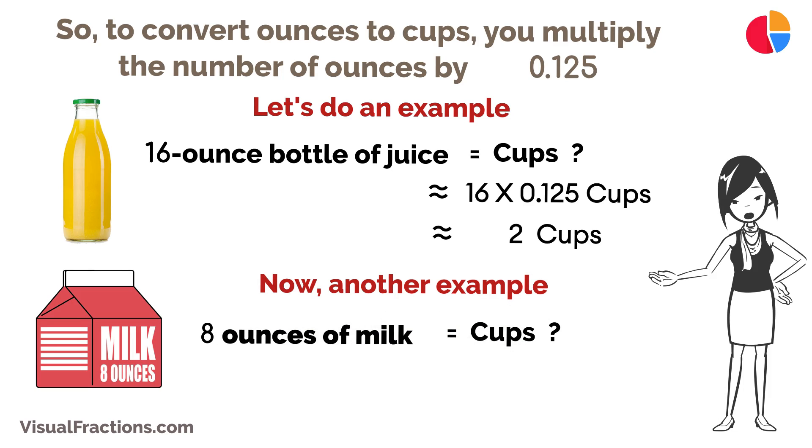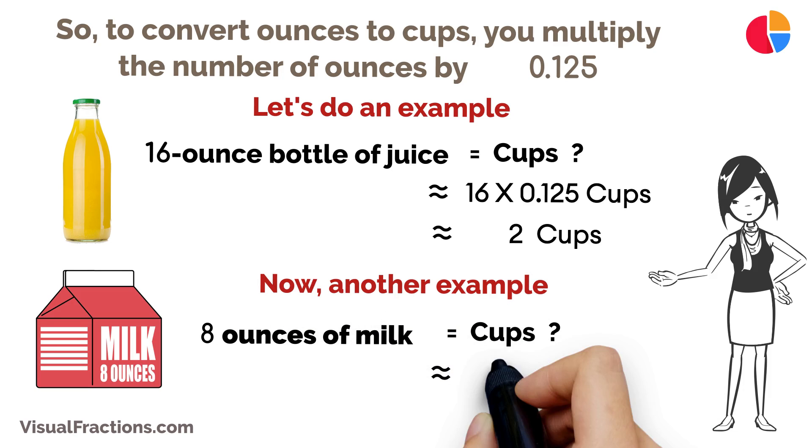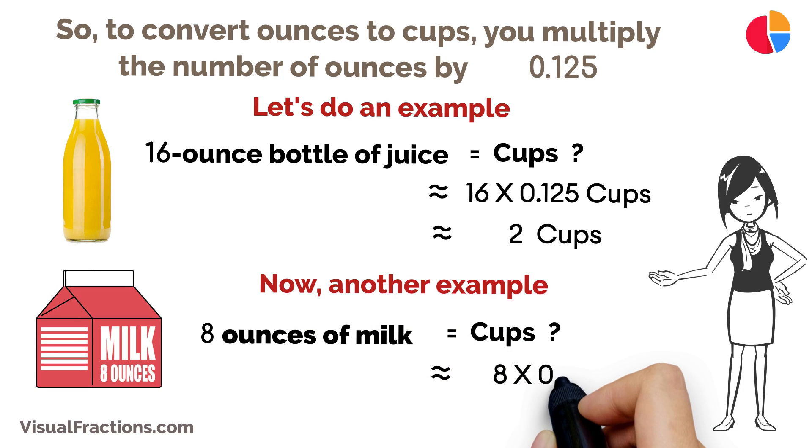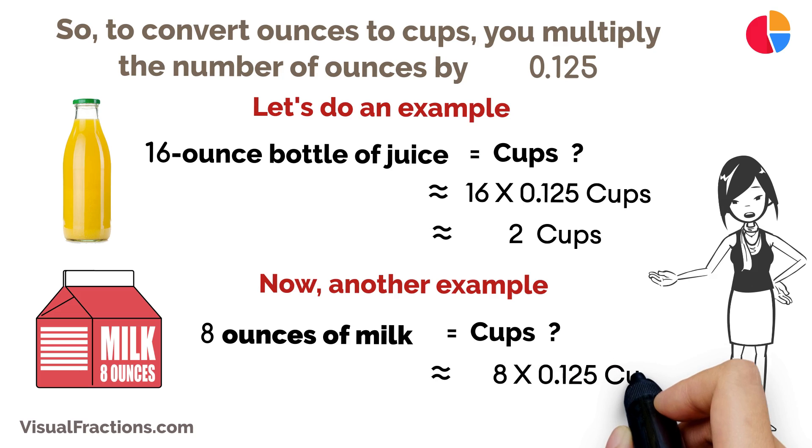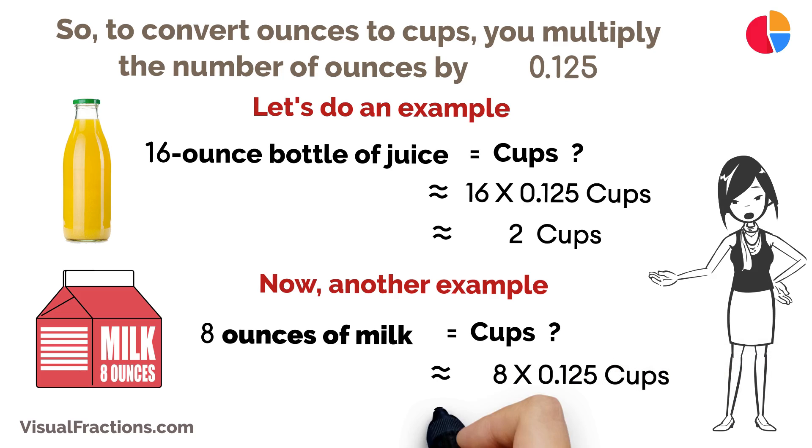Here's another example: suppose you've got 8 ounces of milk. To find out how many cups that is, multiply 8 ounces by 0.125, and you'll find it's 1 cup.